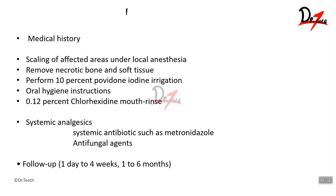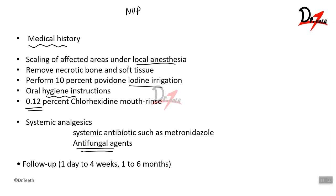For necrotizing ulcerative periodontitis: take a detailed, confidential medical history; perform scaling and root planing of the affected area under local anesthesia; remove all necrotic bone and soft tissue; provide 10% povidone-iodine irrigations; reinforce oral hygiene instructions; prescribe 0.1% chlorhexidine mouth rinses along with systemic analgesics, systemic antibiotics like metronidazole, and antifungal drugs. Follow up on the next day, then at four weeks, and then one to six months regular follow-up.